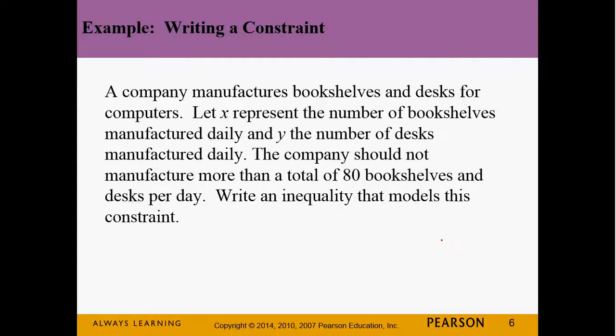What if we add the constraint that the company shouldn't manufacture more than a total of 80 pieces per day? How do you write 'x plus y does not exceed 80'? x + y ≤ 80. That means the total of all bookcases and desks will not be greater than 80 — it can be 80 but no more. That's where the 'equal to' comes in, and that's important.